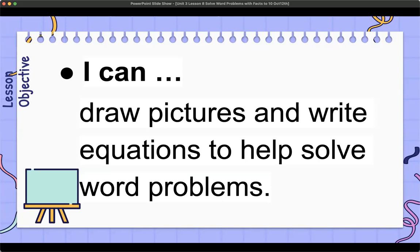The objective today is for your child to understand how to draw pictures and write equations to help solve problems, and more specifically solve word problems, which tend to be a little bit more difficult because we have to take time and understand the vocabulary that goes along with it. This is a great time to spend time talking about what your child is understanding the word problem to be saying.